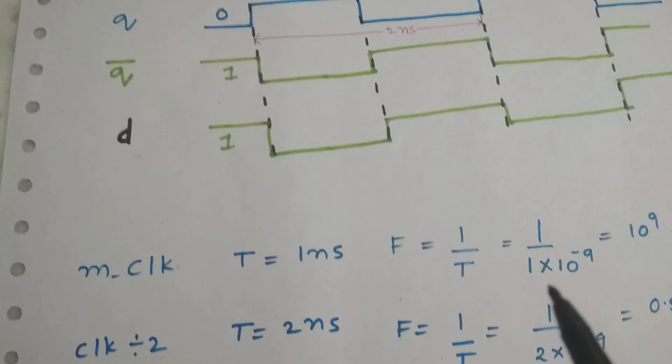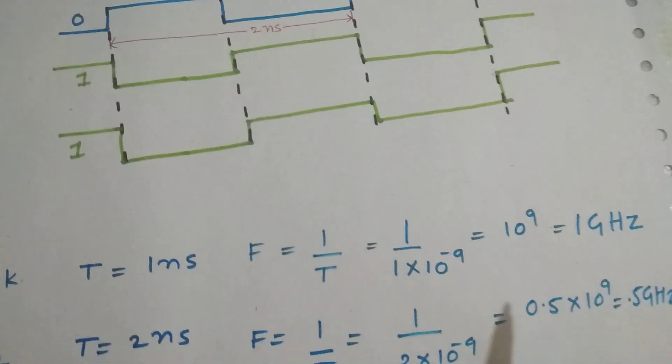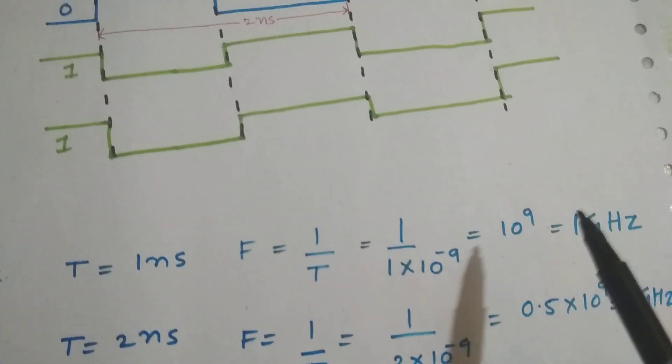So frequency is 1 divided by 1 times 10 power minus 9 nanoseconds. So we are getting 10 power 9, that is 1 gigahertz.